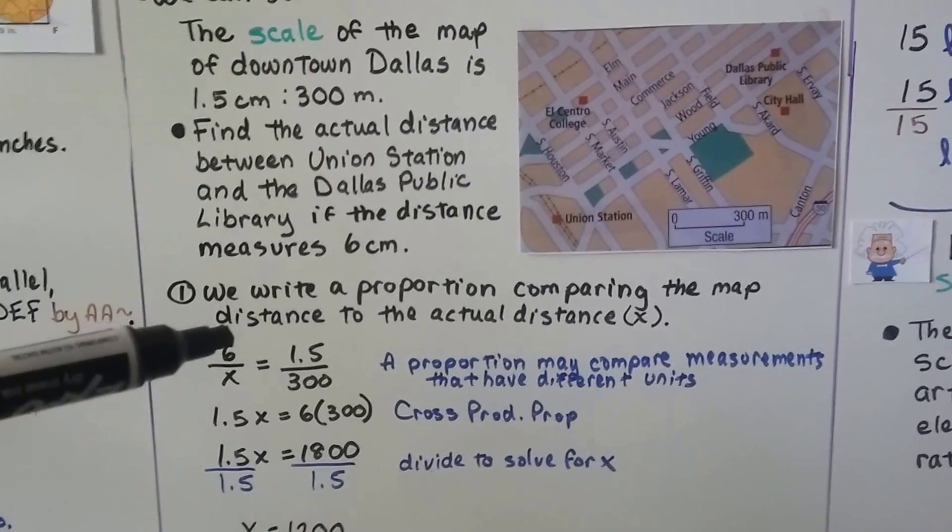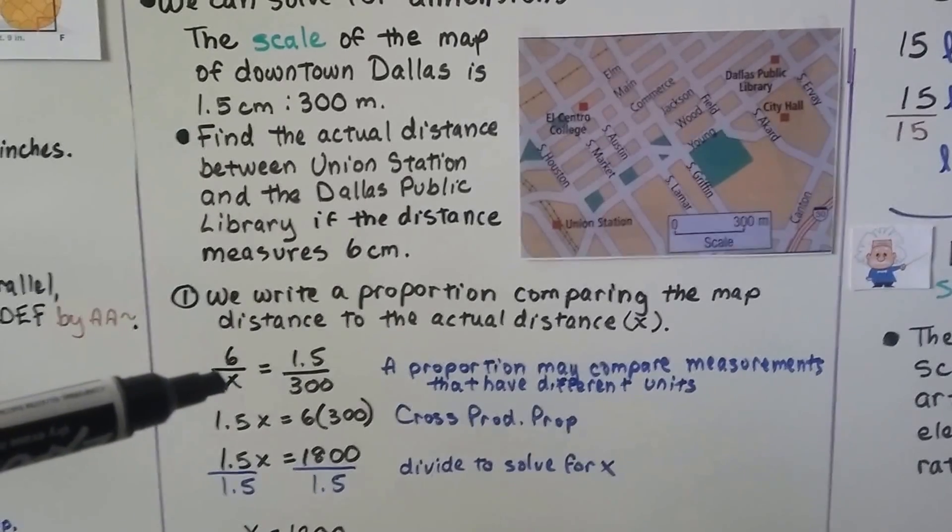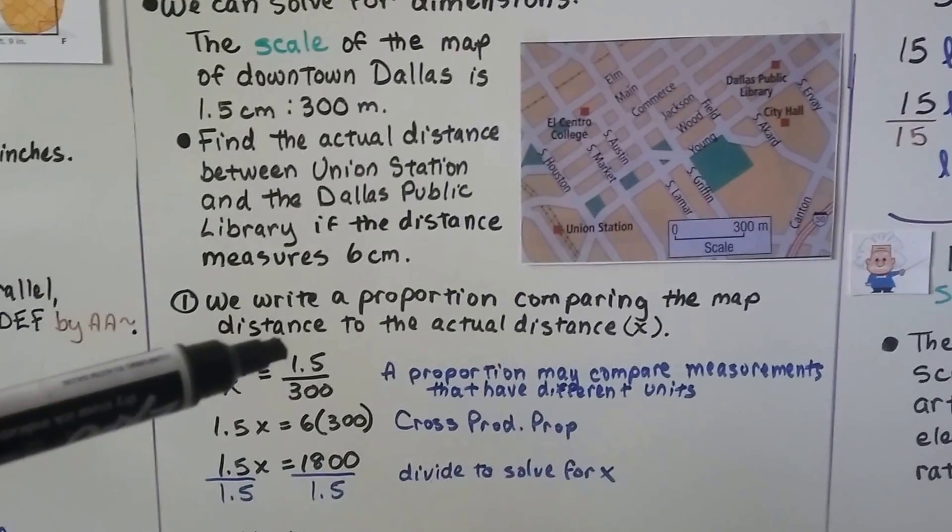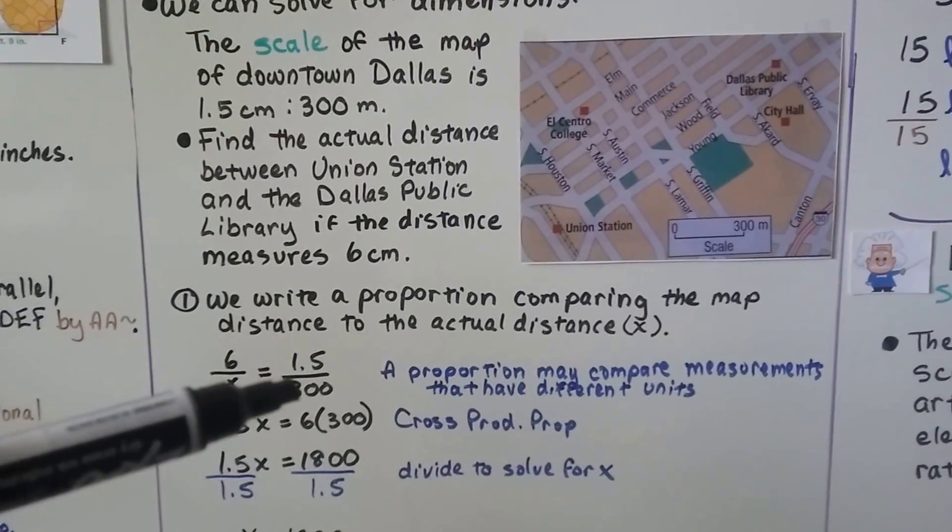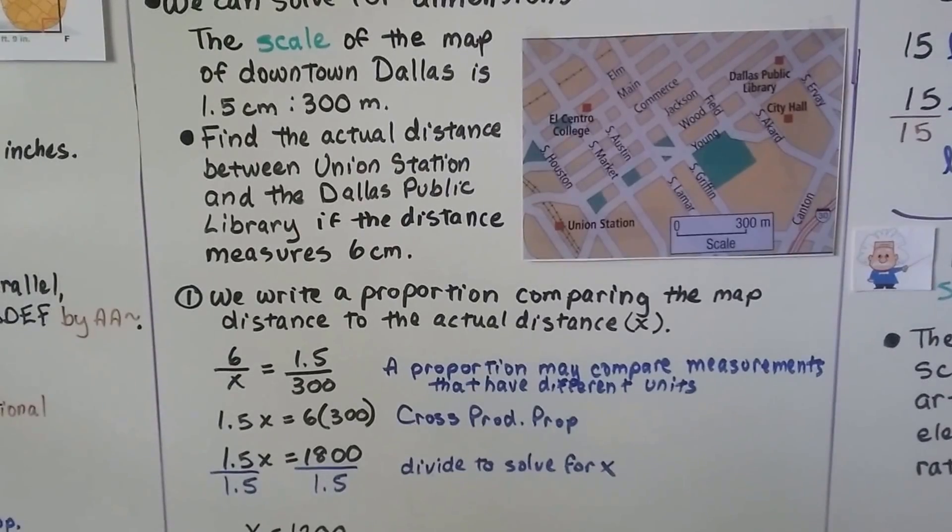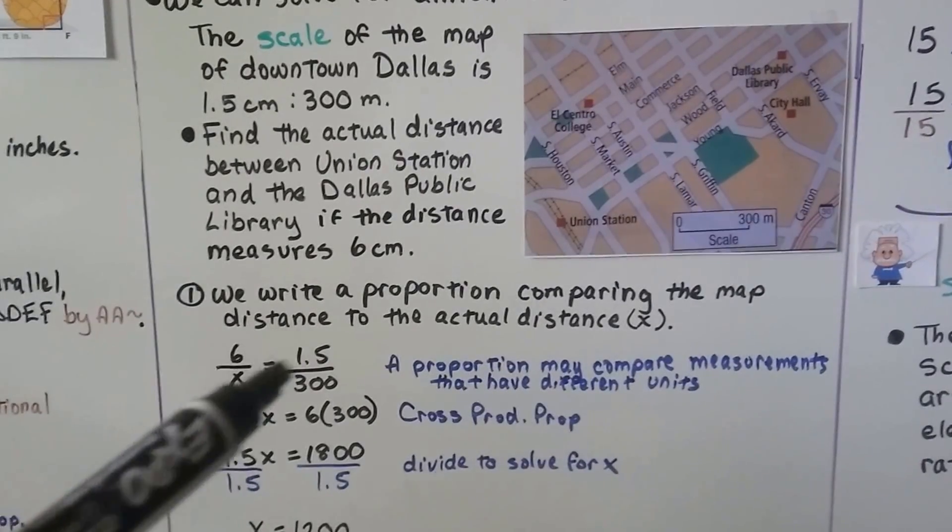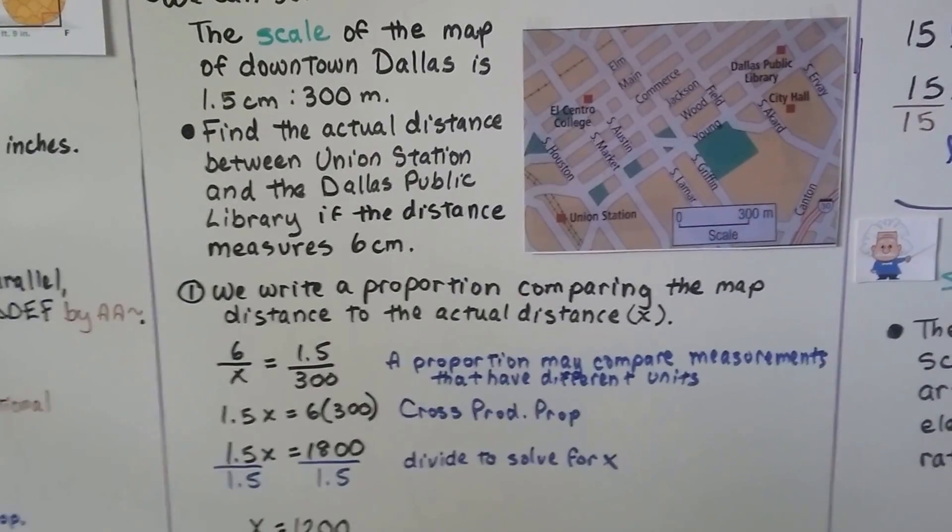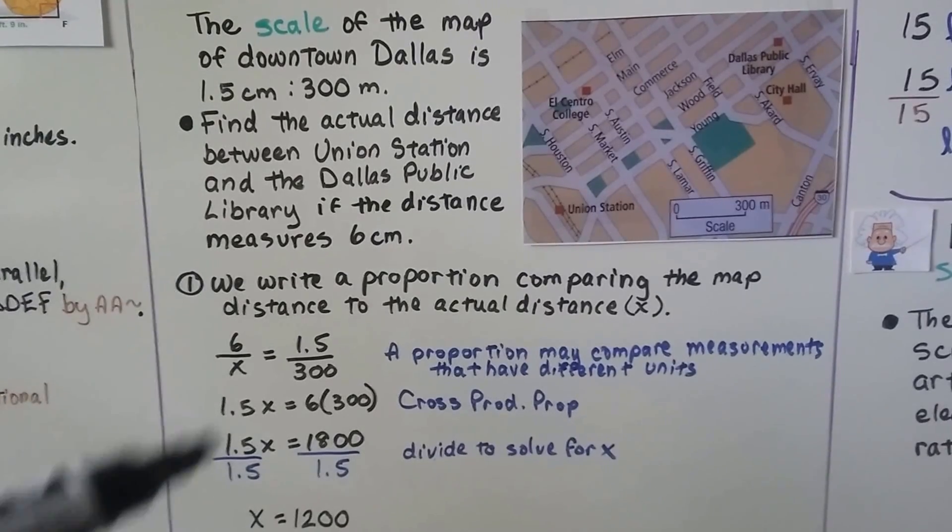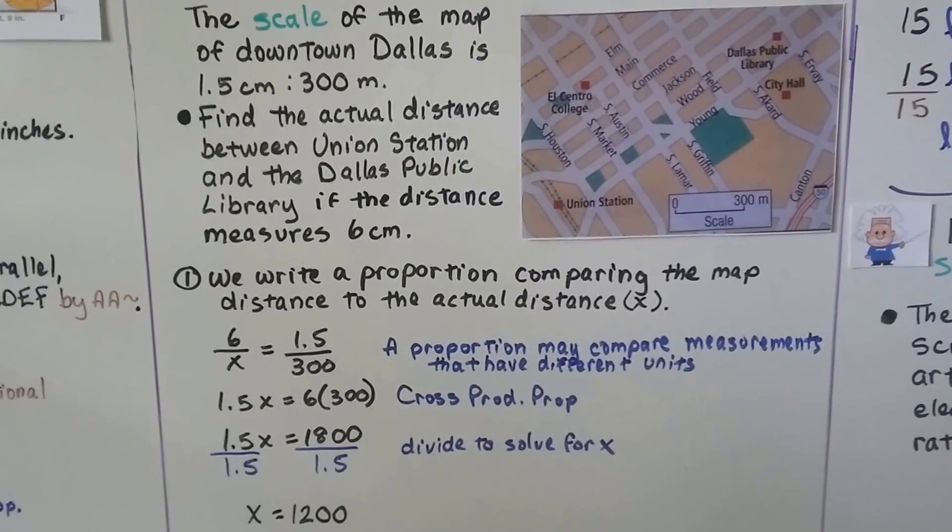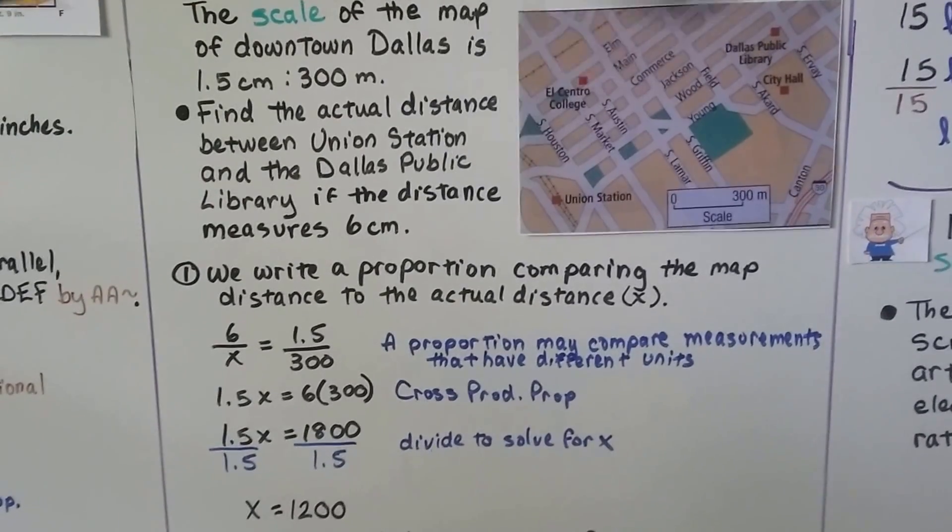We know it's 6 centimeters on the map. We don't know what the actual distance X is. We know 1.5 centimeters on the map is equal to 300 meters in real life. So a proportion may compare measurements that have different units because it's not a dimension. We're just talking about a distance comparison.